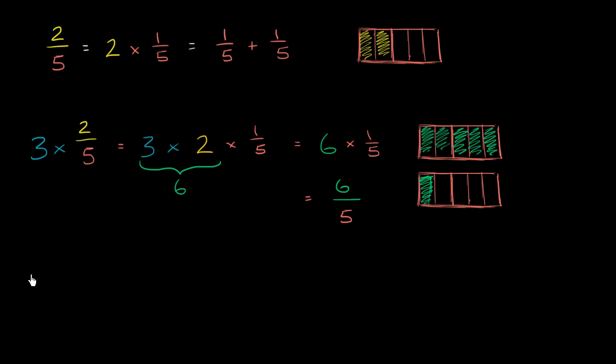So 3 times 2/5, I'll rewrite it. 3 times 2/5 is the same thing as 3 times 1/5 plus 1/5. 2/5 is the same thing as 1/5 plus 1/5. So 3 times 1/5 plus 1/5.